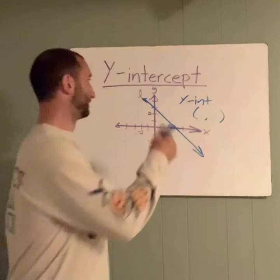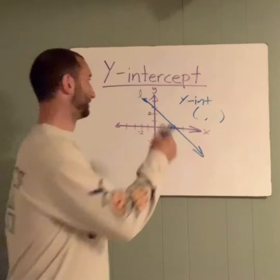That is our y-intercept, so let's write the ordered pair for it. We start at the origin and we don't go to the right or left — we just go straight up. So we have moved 0 on the x, and we're going to move up one, two, three. Y-intercept: (0, 3).